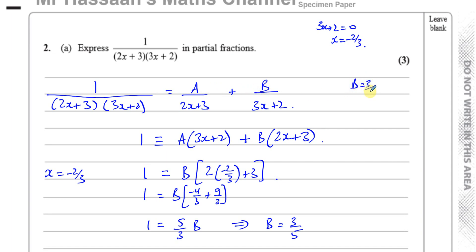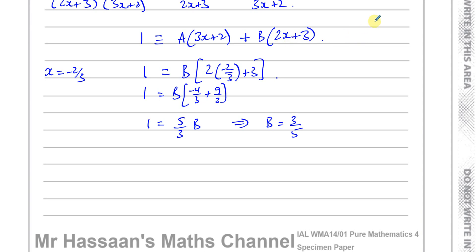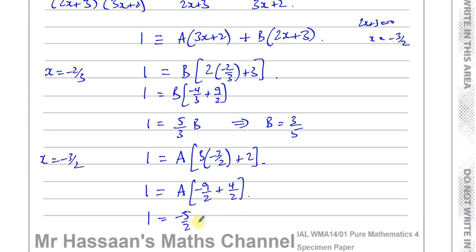Now I need to find A. The value that makes (2x + 3) equal zero is x = −3/2. Substituting x = −3/2, the B term becomes zero, and I'm left with 1 = A(3(−3/2) + 2), giving 1 = A(−9/2 + 4/2) = A(−5/2), so A = −2/5.